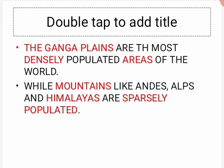The Ganga Plains are the most densely populated areas of the world. Sabse zyada jo population hai, wo Ganga Plains mein hai — kyunki wahan ki jo land hai, wo bahut zyada fertile hai aur wahan par agriculture activities zyada hoti hain. Aur mountainous areas jaise Himalayas hain, wahan par population bahut kam hoti hai.